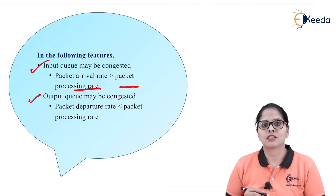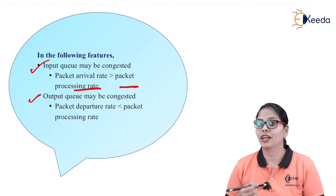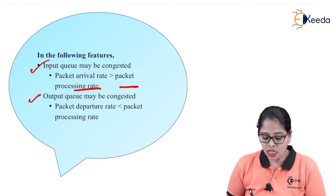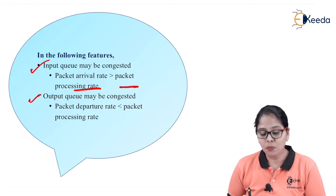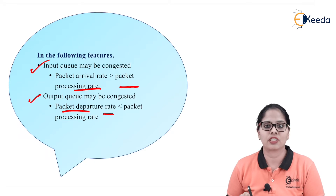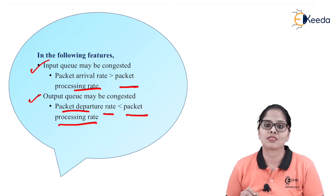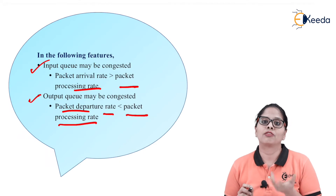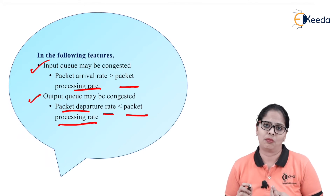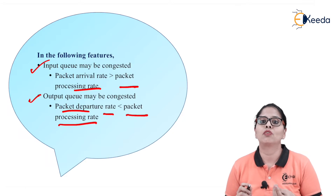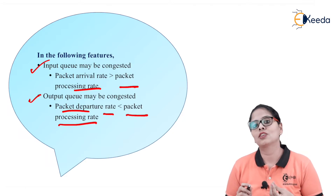The output queue may be congested when the packet departure rate is less than the packet processing rate. If processing takes more time, the packet departure rate will be less, and in that case also, congestion will occur.